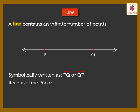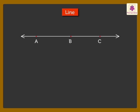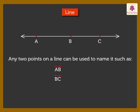Look at this line. Any two points on a line can be used to name it, such as Line AB, Line BC, Line AC, Line CB, Line CA or Line BA.